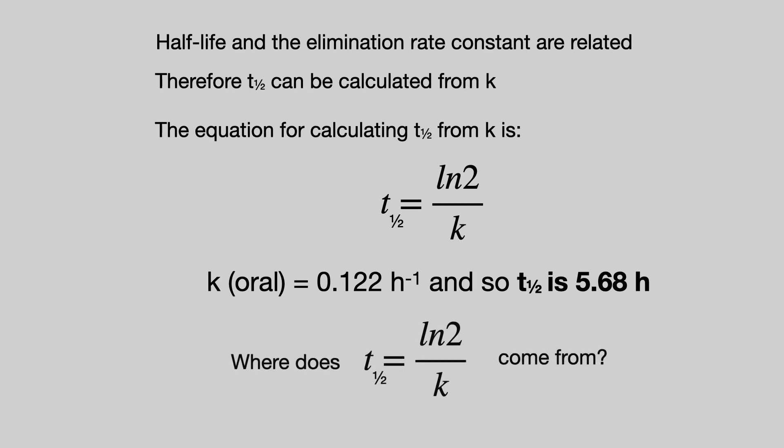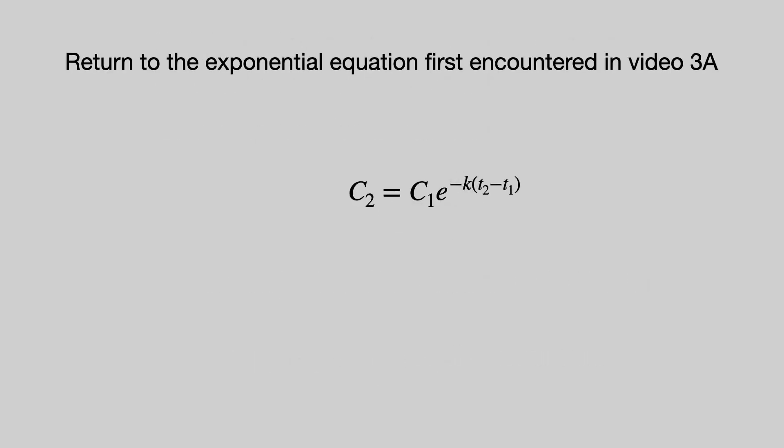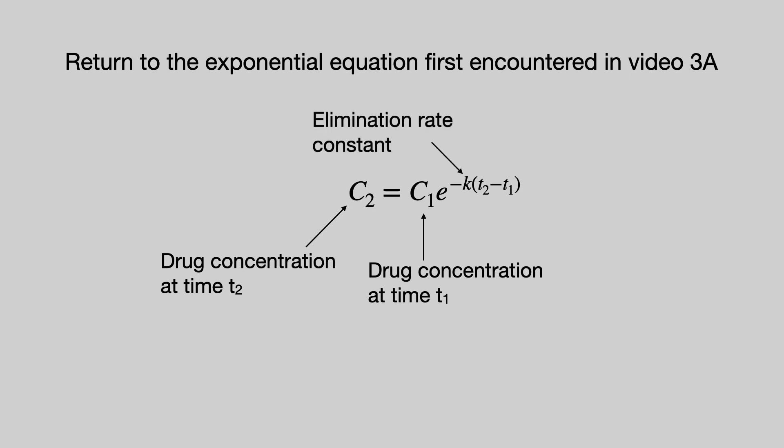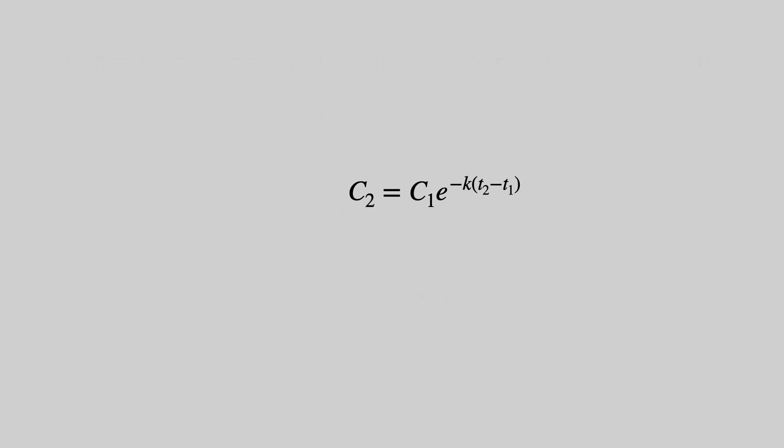Where does that equation come from? It originates from the exponential equation first encountered in video 3. Let's remind ourselves of the terms. C2 is the drug concentration at time T2, C1 is the drug concentration at time T1 and K of course is the elimination rate constant. If we just pop the equation up in the corner to give ourselves some room.